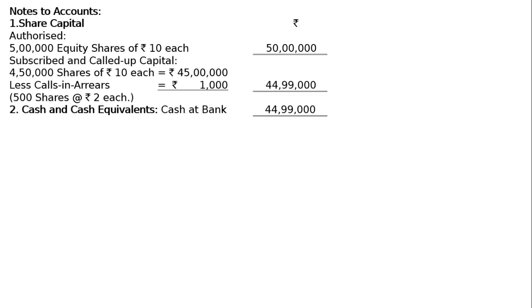Notes to accounts. 1 - Share capital authorized: five lakh equity shares of Rs 10 each = Rs 50 lakhs. Subscribed and called-up capital: 4,50,000 shares of Rs 10 each = Rs 45 lakhs. Less calls in arrears: 500 shares at Rs 2 each = Rs 1,000. That gives Rs 44,99,000. 2 - Cash and cash equivalents: cash at bank Rs 44,99,000. This is all about answer 1.